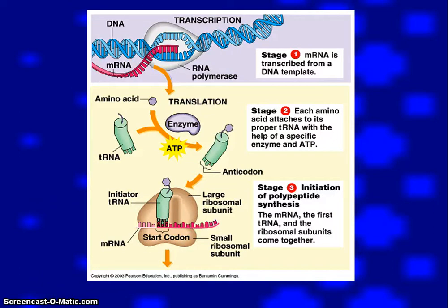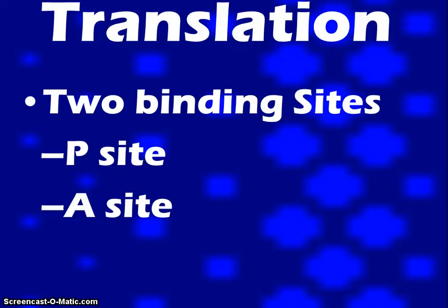It is also broken down into initiation, elongation, and termination. But before we can get into those steps we need to understand what the P site is and the A site. The P site is what's going to hold the growing polypeptide chain. The A site is going to hold just one amino acid. So: P for polypeptide, A for amino acid.